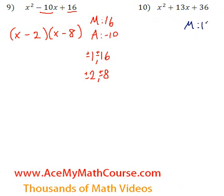So, we want two numbers that multiply to 13. Nope. Two numbers that multiply to 36. Sorry about that. I guess it's been a long day. And two numbers that add up to 13.